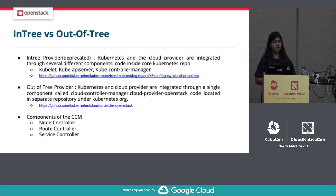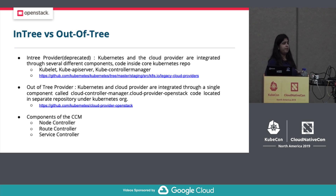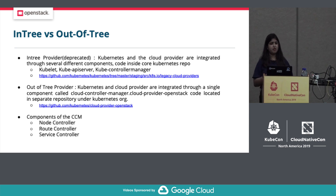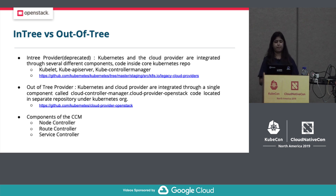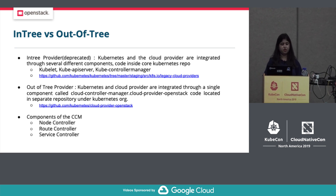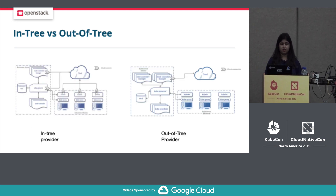With the in-tree provider, various Kubernetes components like kubelet and kube controller manager talk directly to the cloud API. With the out-of-tree provider version, all these things are segregated to a single binary called the cloud controller manager. This is the basic diagram for the in-tree versus out-of-tree cloud provider. All the control loops extracted from the kube controller manager and kubelet are now in the CCM binary — the cloud controller manager.